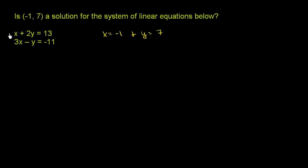So let's try it out with the first equation. We have x plus 2y is equal to 13. We're testing to see if when x is equal to negative 1 and y is equal to 7, will x plus 2y equal 13? So we have negative 1 plus 2 times 7. This needs to be equal to 13.